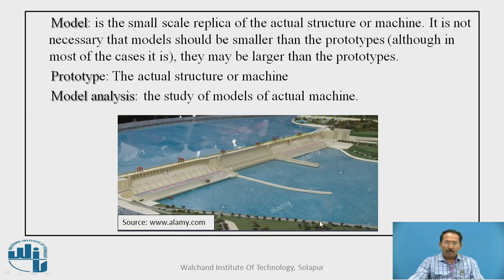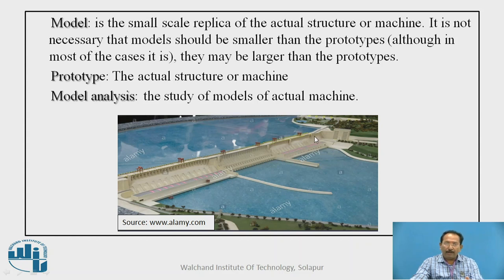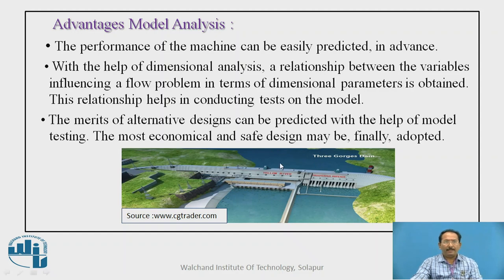Here is a photograph of a model — see how large it is. Models are not always very small; to study effectively, models may be large in size also. This is a dam model — here is the downstream side and this is the upstream side. Very small details have already been shown in this particular model. One advantage of model analysis is that the performance of the machine can be easily predicted using dimensional analysis, and a relationship between different variables influencing the flow problem in terms of dimensional parameters is obtained.